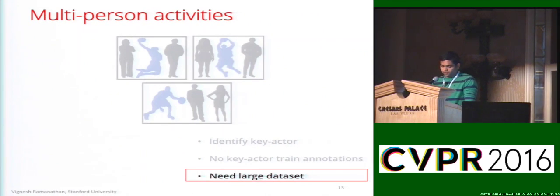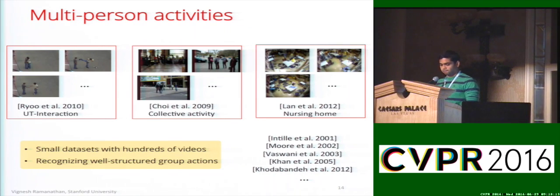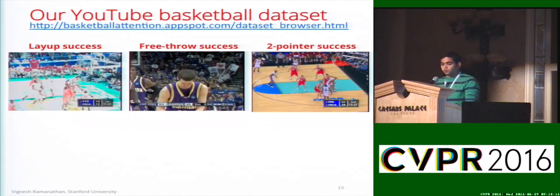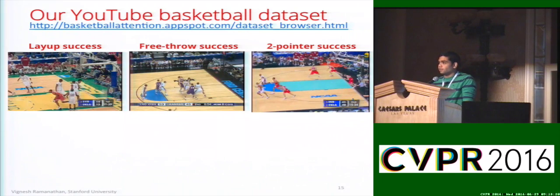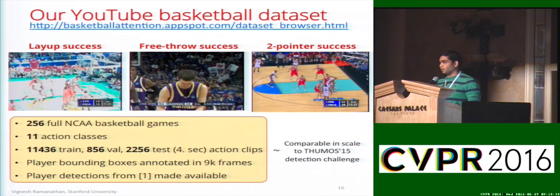Let's start with the dataset. Multi-person events is not a new topic in computer vision. There are quite a few works in understanding group activities, but most datasets in this domain are quite limited in size compared to single person activities. In contrast, we introduce a new YouTube basketball dataset constructed from 256 full-length NCAA basketball games, comprising 11 different basketball shots, with 11,000 training instances and thousands of validation and test instances — almost at the scale of the MOST15 detection challenge.